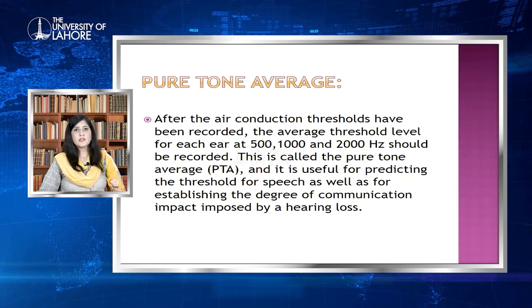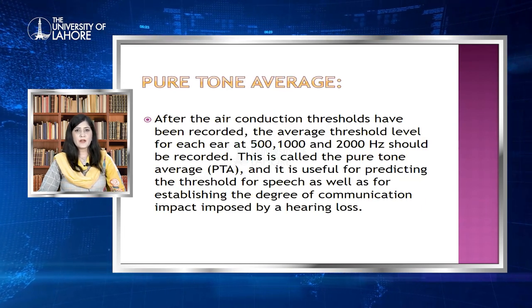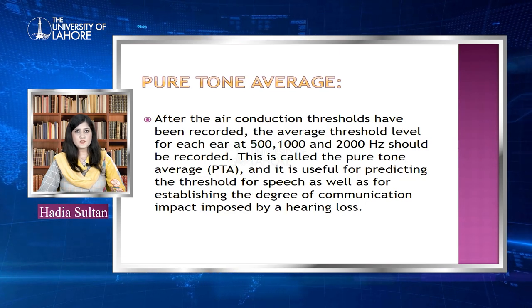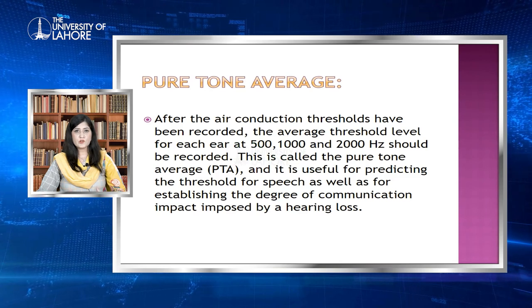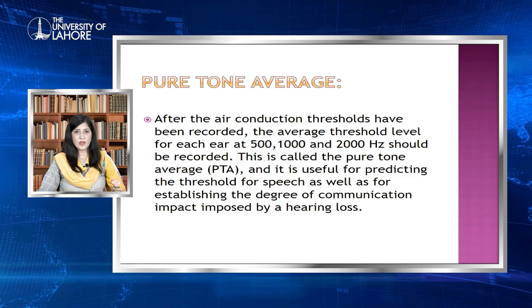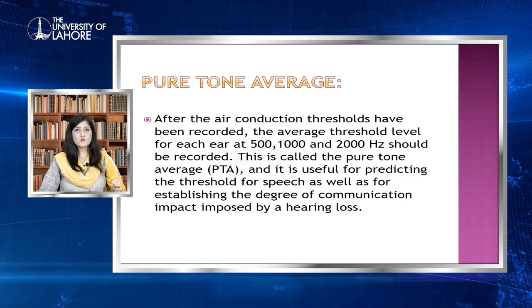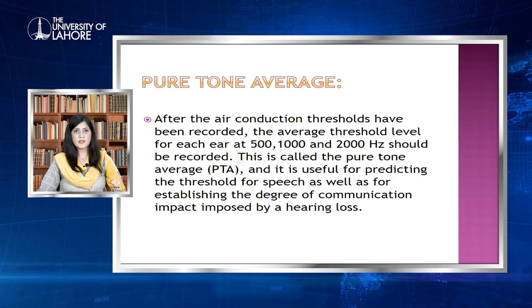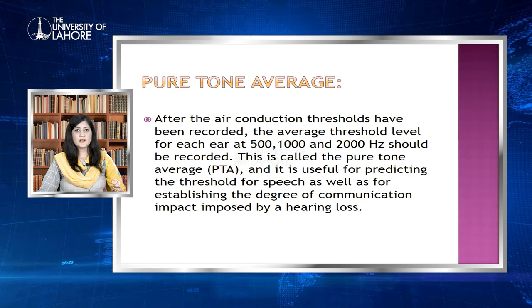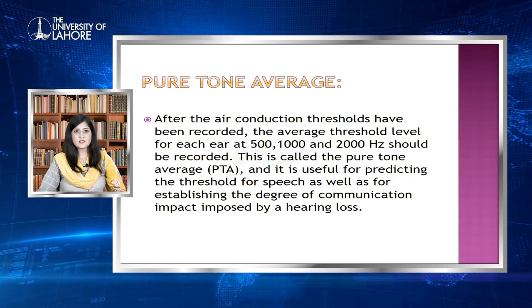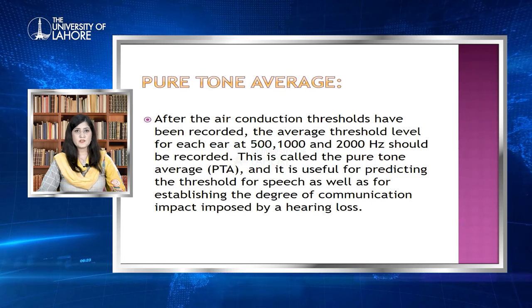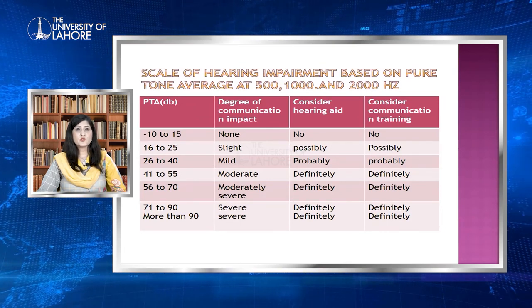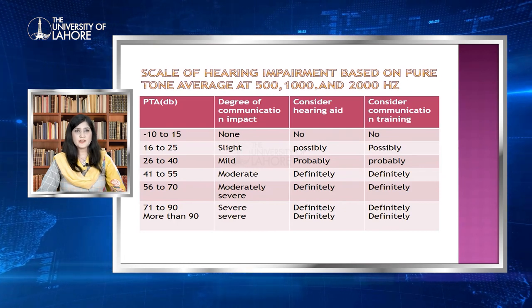After the air conduction thresholds have been recorded, the average threshold level for each ear at 500, 1000, and 2000 Hz should be calculated. This is called the pure tone average (PTA): add the thresholds at those three frequencies and divide by 3. The PTA is useful for predicting the threshold for speech as well as for establishing the degree of communication impact imposed by the hearing loss.